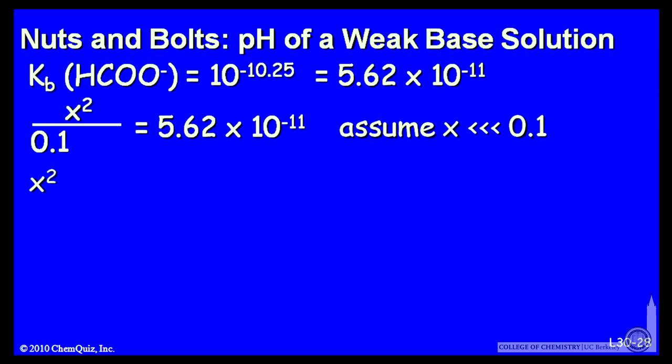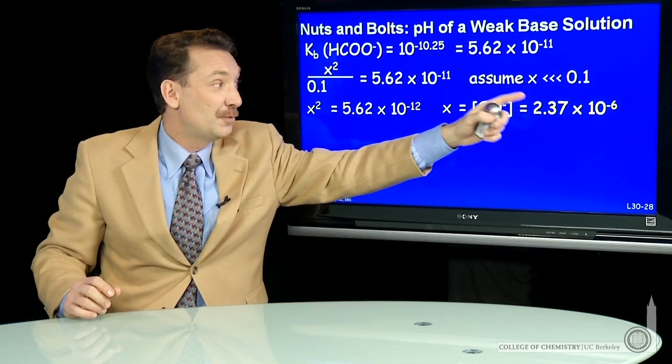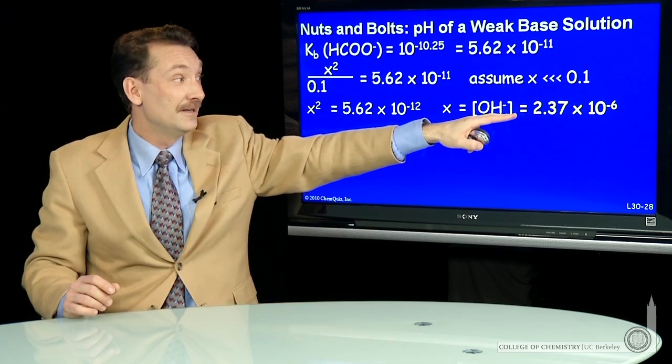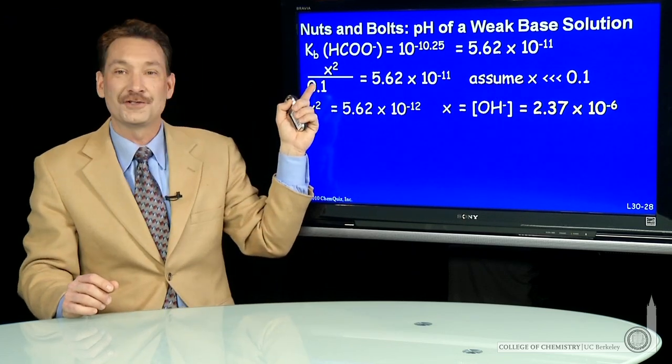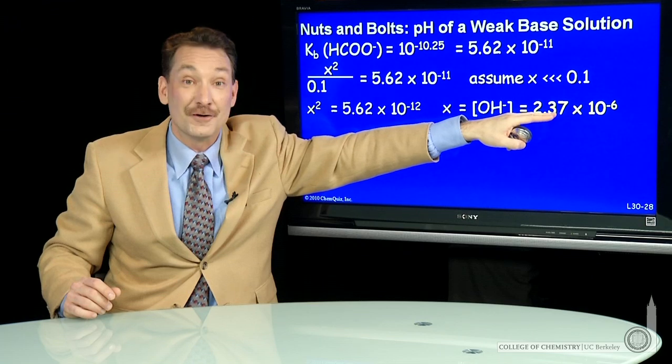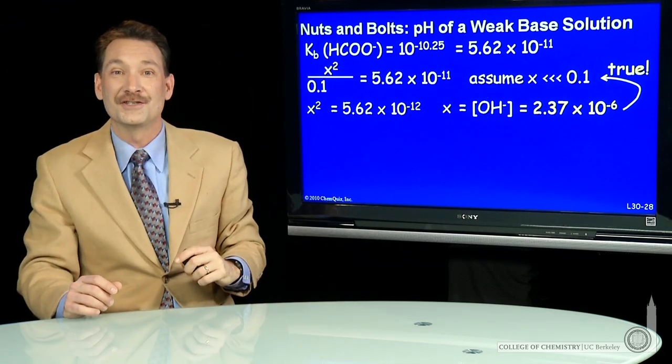Here I'd solve the quadratic equation, which you can do, especially with a modern calculator. But easier to make an assumption. And when you make that assumption, x squared is 5.62 times 10 to the minus 12. And then just take the square root, and you get the OH minus concentration. And you see it's 2.37 times 10 to the minus 6. And indeed, that's much smaller than 10 to the minus 1. Our original concentration, 10 to the minus 1, the amount that dissociates, about 10 to the minus 6. So it's indeed true that x is small compared to 0.1.